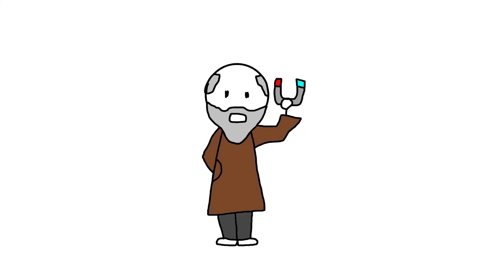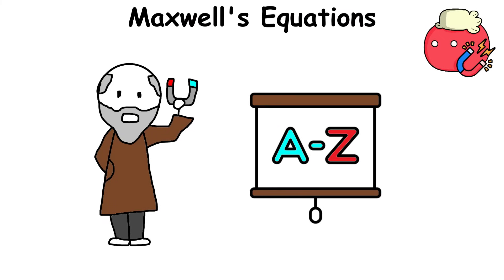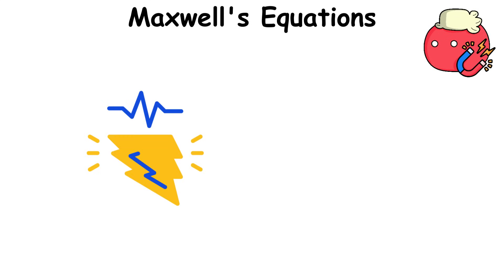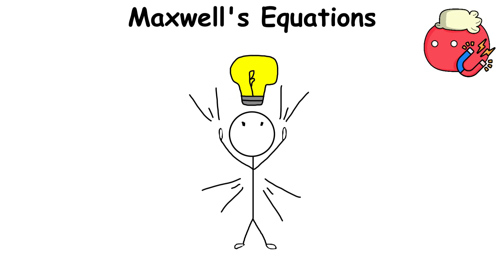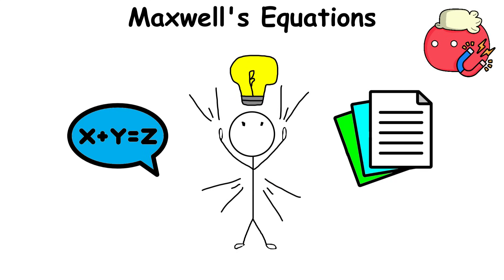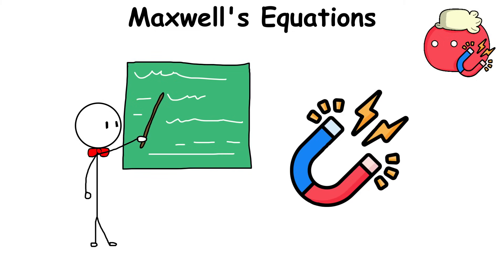Maxwell's Equations. Maxwell's equations are fundamental equations that describe how electric and magnetic fields behave and interact. Think of these equations as the ultimate cheat sheet that explains how electricity and magnets work.